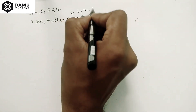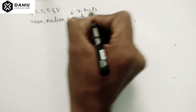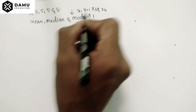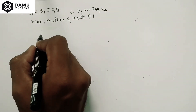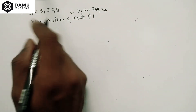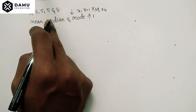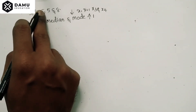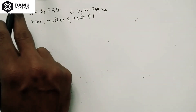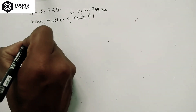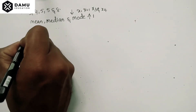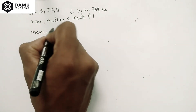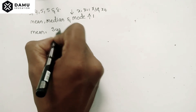If the four added numbers are x1, x2, x3, and x4, then the mode always increases by one. Before solving, we need to know the mode, median, and mean for the original values. The mean is the sum of all numbers divided by the count of numbers.